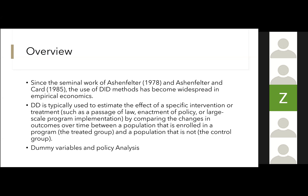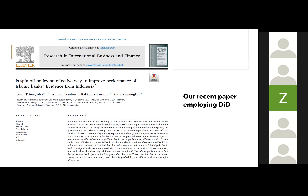DiD uses dummy variables to identify pre- and post-treatment periods and to distinguish between the treated group and the control group. We have four kinds of groups: the treated group before treatment, the treated group after treatment, the control group without treatment before the treatment period, and the control group after the treatment period. This approach is useful for policy analysis.